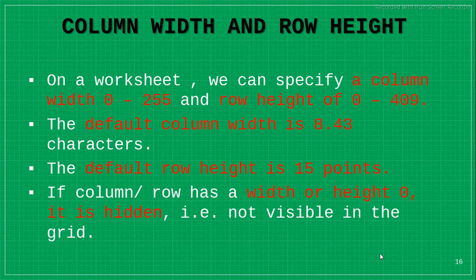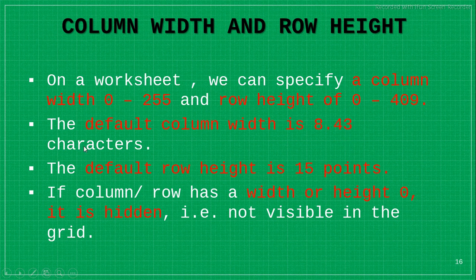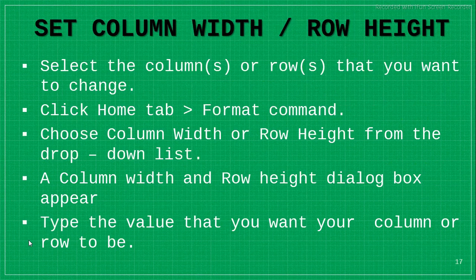Let's move to column width and row height. In a worksheet, column width can be specified from 0 to 255 and row height from 0 to 409. The default column width is 8.43 characters and the default row height is 15 points. Height is always measured in points and width is always measured in characters. If a column or row width is 0, it means that row or column is hidden.